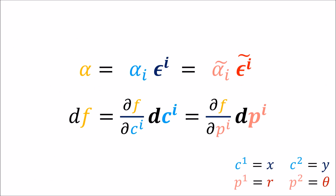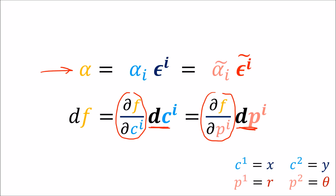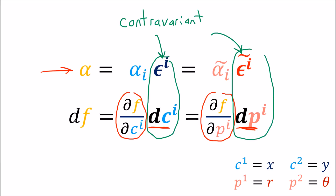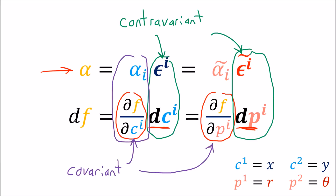The main takeaway is that we can expand covector fields into linear combinations of basis covector fields, and when we use different bases we get different components — the same thing we've been doing all along with individual covectors. In the next video we're going to learn the transformation rules for covector fields, and we're going to learn that basis covector fields are contravariant but covector field components are covariant.